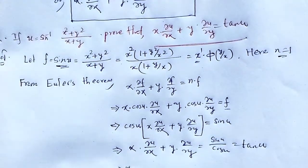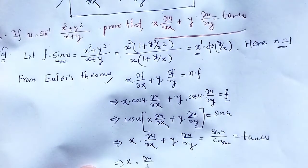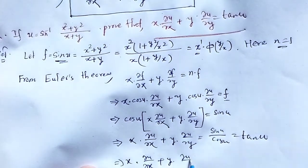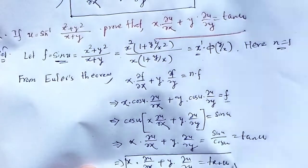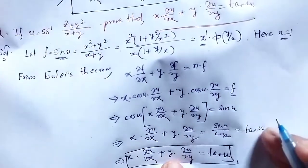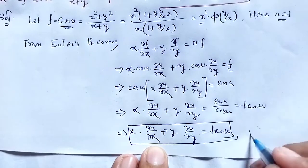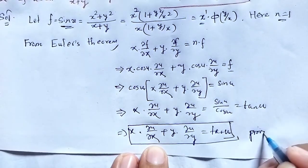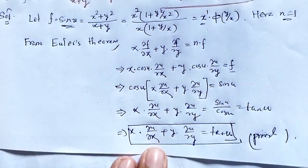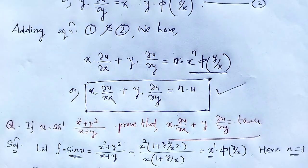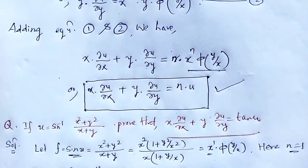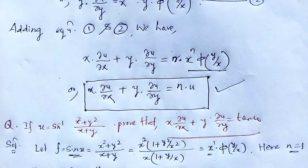Therefore, x·(∂u/∂x) + y·(∂u/∂y) = tan u — proved. In this way we have studied what is total derivatives and Euler's theorem, and how we can solve a problem by using Euler's theorem. With these notes, let me wind up this session. Thank you.